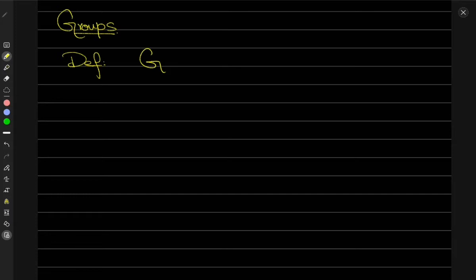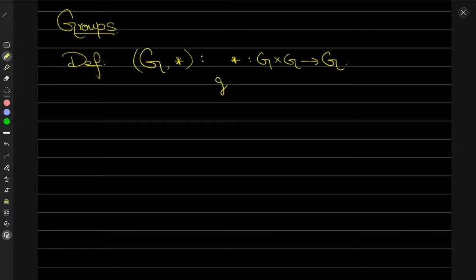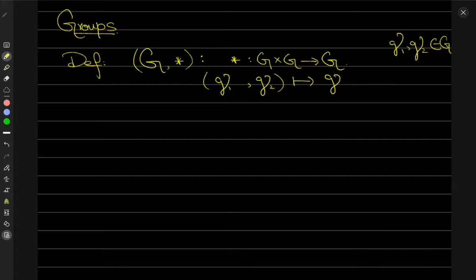Suppose you have a set G with a binary operation — we are going to call this operation star. The operation maps G cross G to another element from G, meaning that if I take two elements G1 and G2 that both belong to the group G, this binary operation maps them to G1 star G2, which means I'm composing G1 with G2.